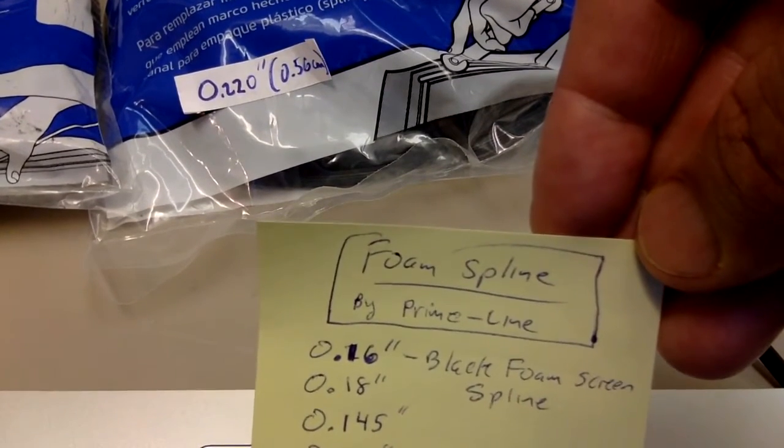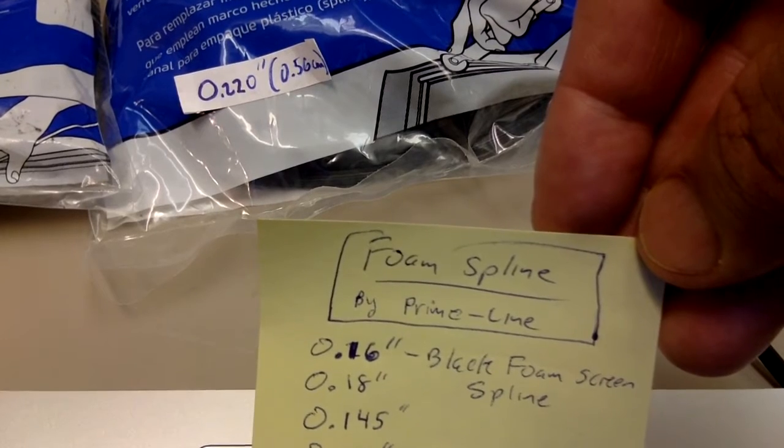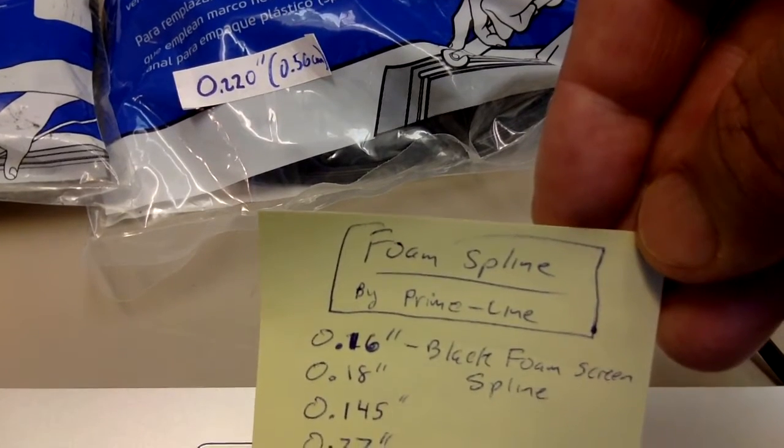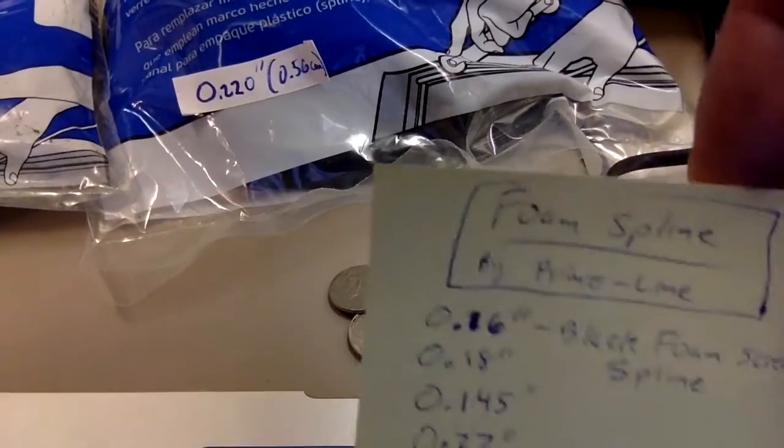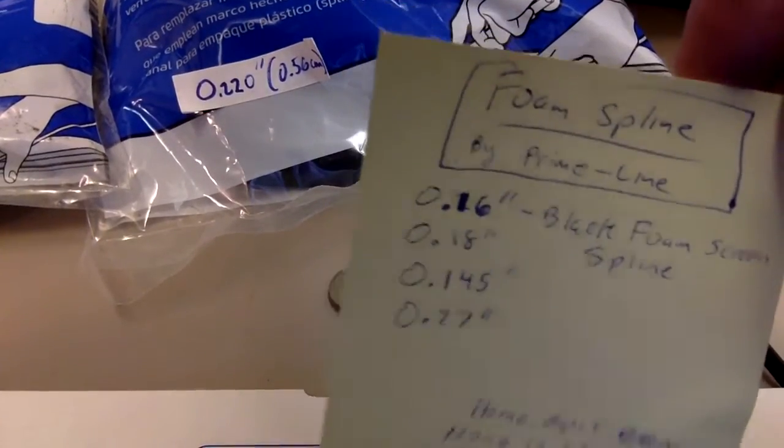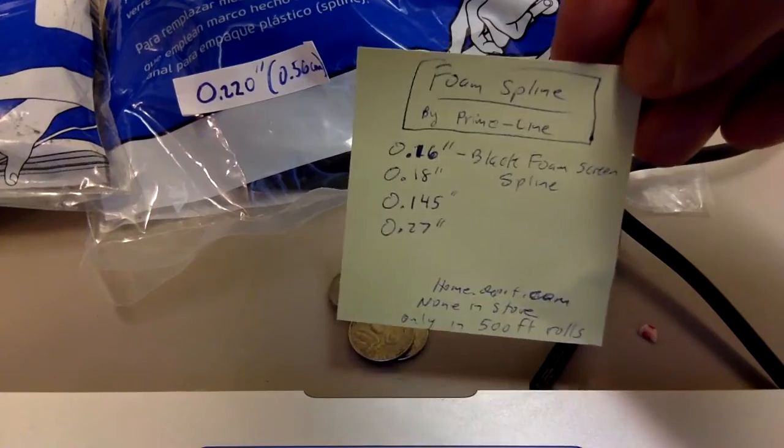The sizes are on the Home Depot website. The manufacturer is Prime Line: 0.16 inch, 0.18 inch, 0.145 inch, and 0.27 inch. You might want to research that.